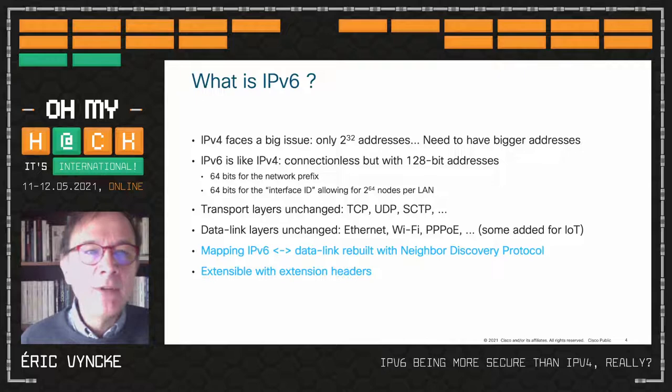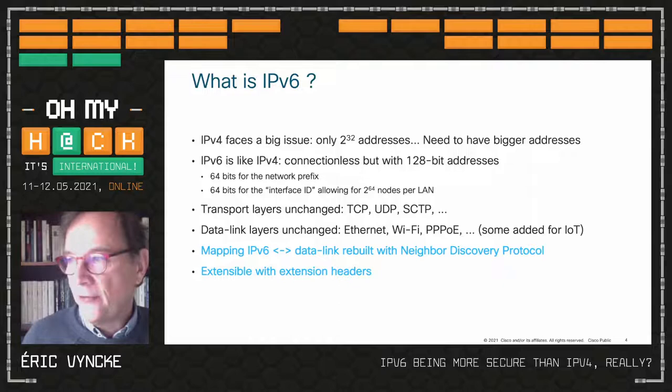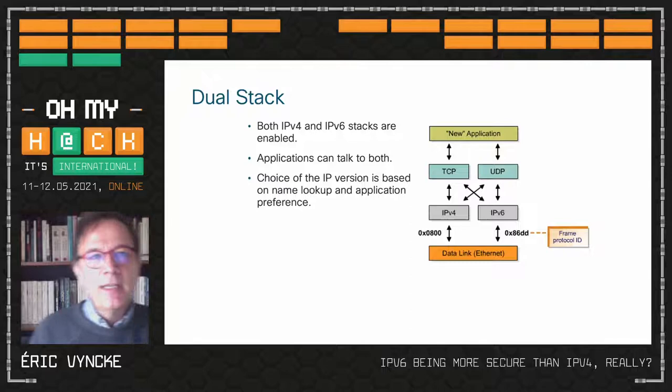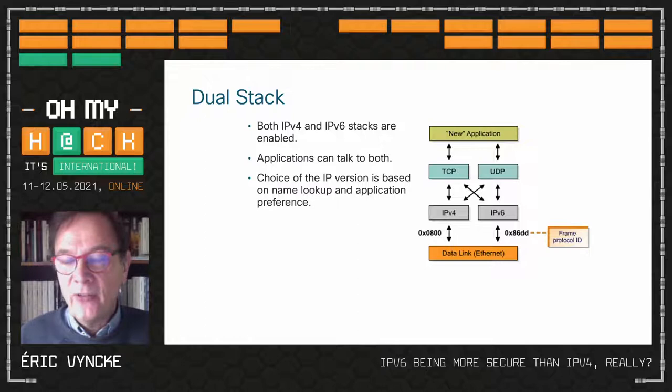The key differentiator security-wise between IPv4 and IPv6 is the mapping of an IPv6 address to a MAC address or link-layer address, which has been completely rebuilt from scratch — this is called the Neighbor Discovery Protocol. Rebuilt from scratch means introducing new bugs, of course, and it's extensible. The way we deploy IPv6 is typically what we call dual stack, where the network layer is either IPv4 or IPv6, typically a choice of the application or operating system.